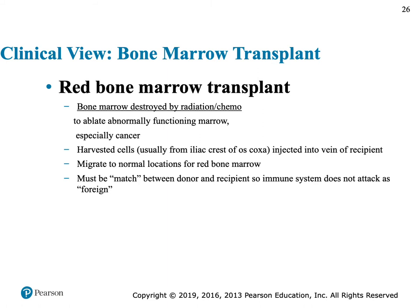If bone marrow has been destroyed — maybe from radiation in a cancer patient, or because a sickle cell patient needs a bone marrow donor — harvested cells can be injected into a vein of the person who needs them. Remarkably, it knows how to get to the bone marrow. And forever after, the receiver's DNA is going to say they're that person who donated. It's amazing and miraculous.